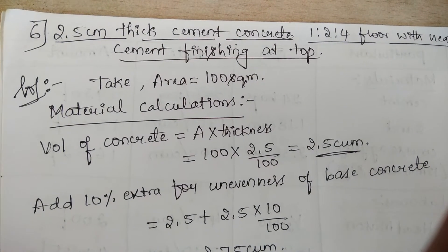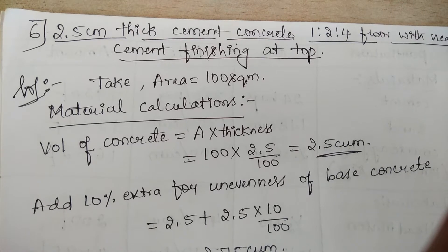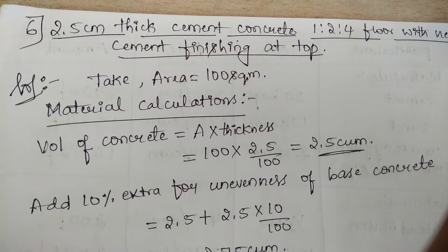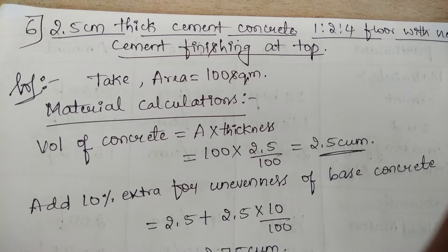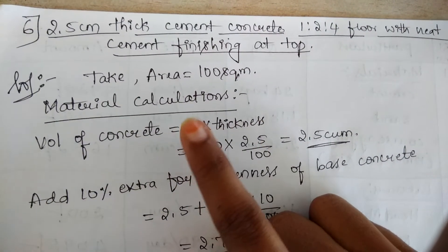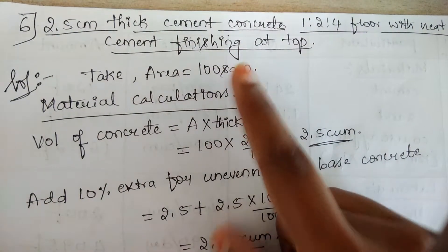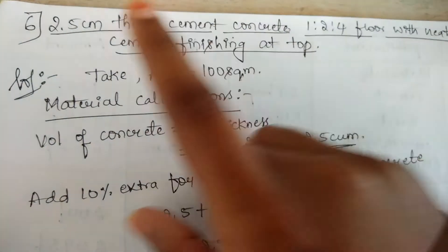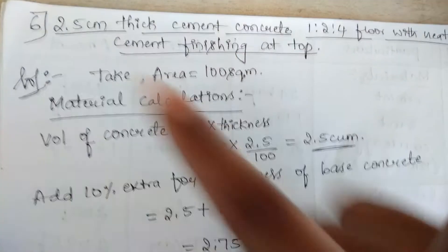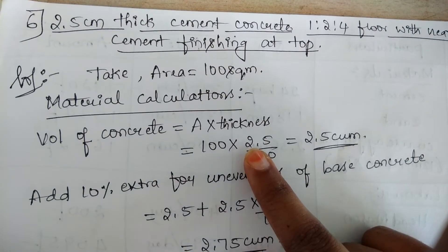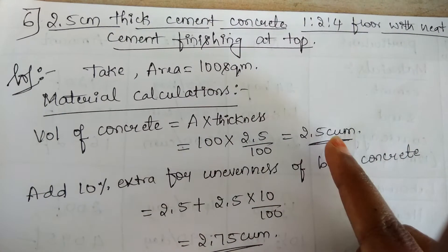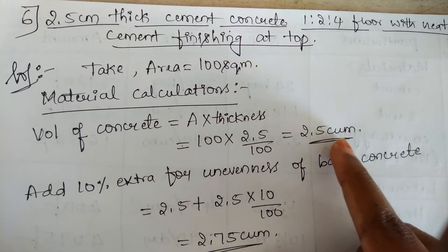Let us consider an area of 100 m². Now we have to do the material calculation. To find the volume of concrete for an area of 100 m², the volume will be found out by multiplying area with the thickness. Here the area is 100 m² and thickness is 2.5 cm. Convert that centimeter to meters by dividing by 100, so on simplifying we will get a value of 2.5 m³.